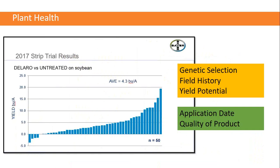A data set from Bayer looking at a new soybean fungicide treatment showed responses ranging from negative to 20 bushels, with an average around 4.3. The response depends on the actual bean used, whether that genetic responded to management pressure, disease pressure, field history, and yield potential. In a 50-bushel yield environment, fungicides only protect top-end yield — they don't increase it. But in a 100- or 170-bushel environment, there's much more stress in that bean plant, so you'll likely see more yield response.